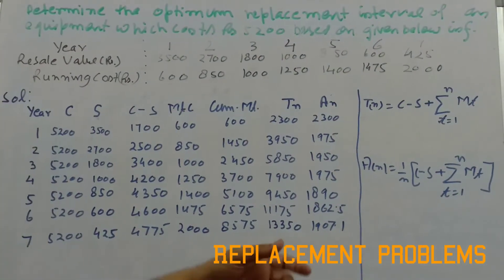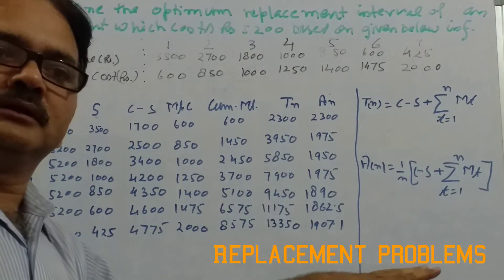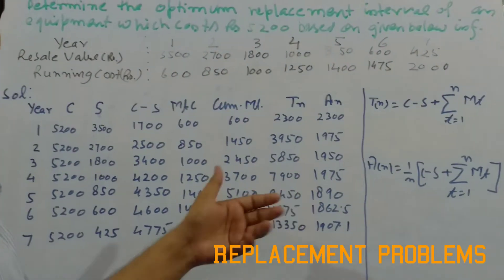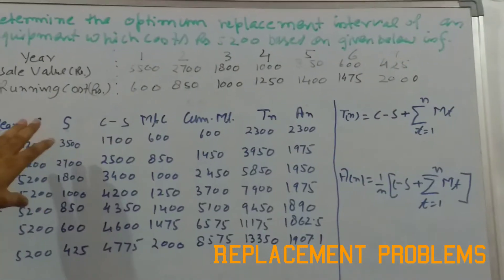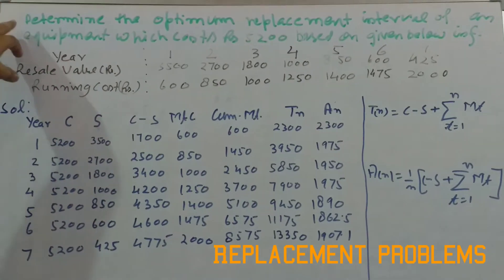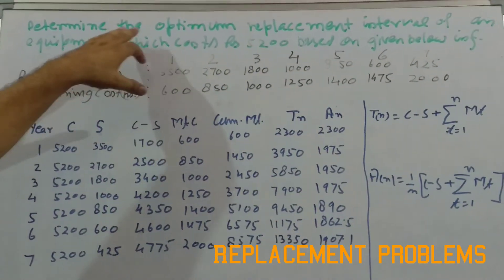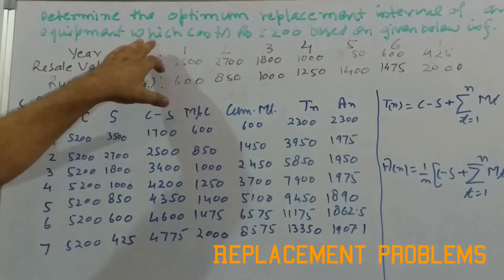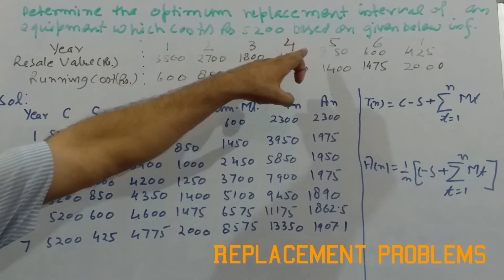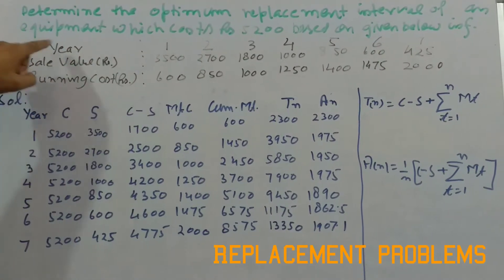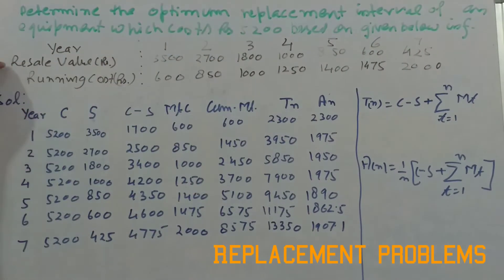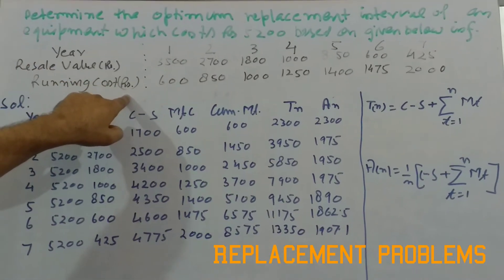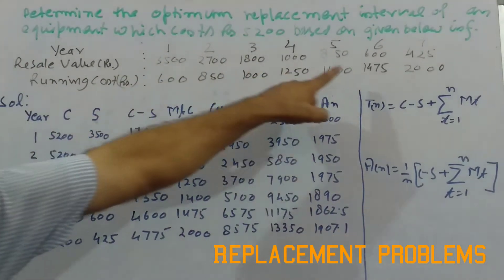So here for understanding this replacement, I have taken a practical problem wherein the problem is of determining the optimum replacement interval for an equipment which cost is 5200, and here in different years its resale value and running cost, that is cost of maintenance, is given.